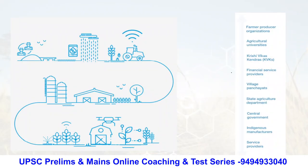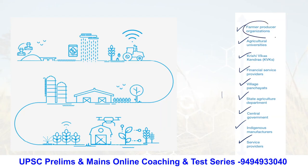Coming to the implementation of drone culture in agriculture, there should be service providers, indigenous manufacturers of drones, support from the central government and state agriculture departments, village-level panchayats working in line with norms, financial service providers, efficient Krishi Vikas Kendras, a culture of agriculture universities, and finally farmer producer organizations — a farmer collective that comes together to work for the benefit of farmers.